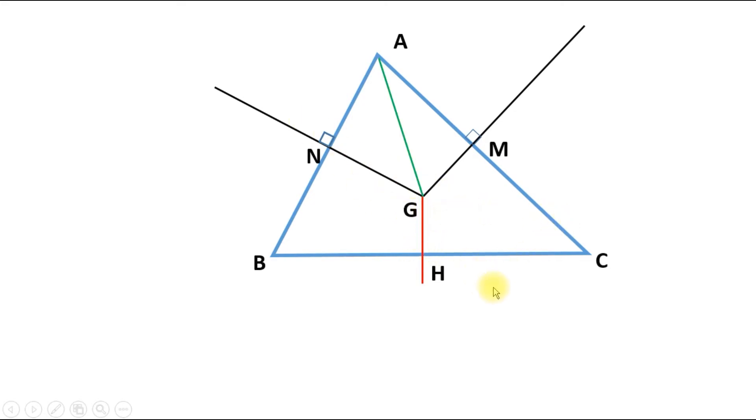Now to do this we draw the segments GA, GB and GC. Now because GN is the perpendicular bisector of AB, any point on this line will be equidistant from the end points, therefore GA will be equal to GB. The length of GA and the length of GB are the same.